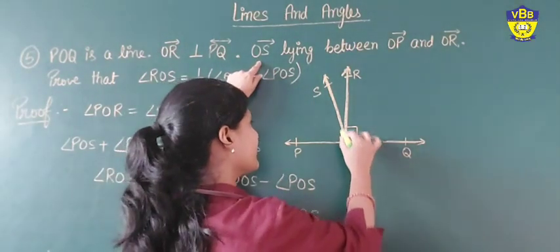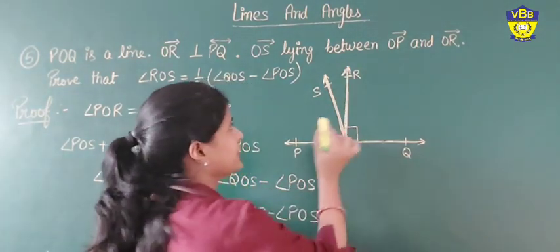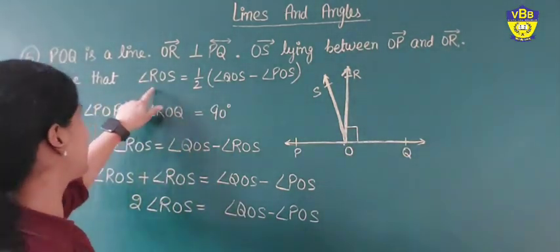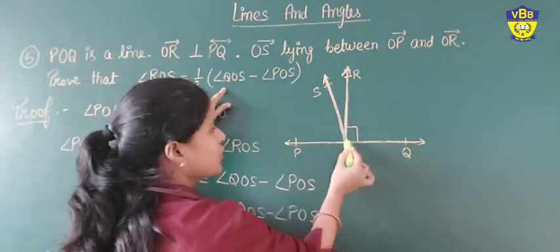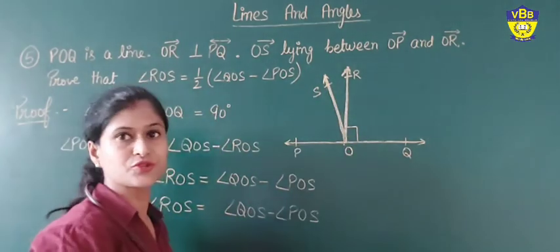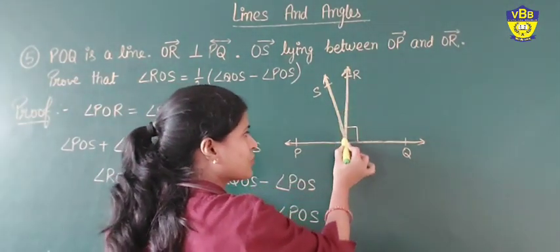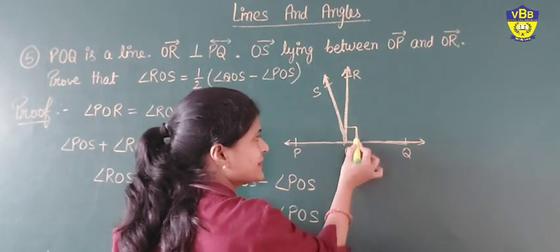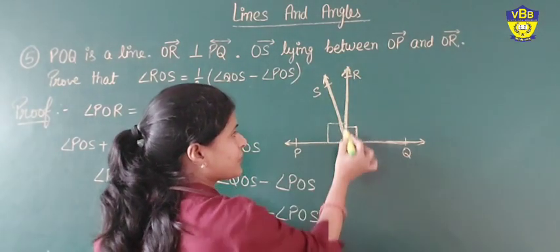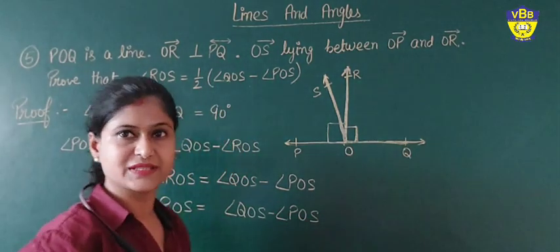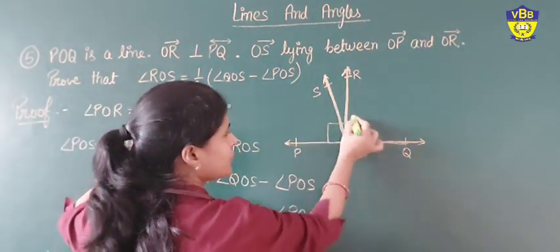One more ray OS lies in between ray OP and ray OR. You need to prove that angle ROS is equal to half of angle QOS minus angle POS. In the proof, as it is given that ROQ is 90 degrees — this symbol represents 90 degrees. So if this is 90 degrees, this also becomes 90 degrees. So angle POR and angle ROQ are both equal to 90 degrees.